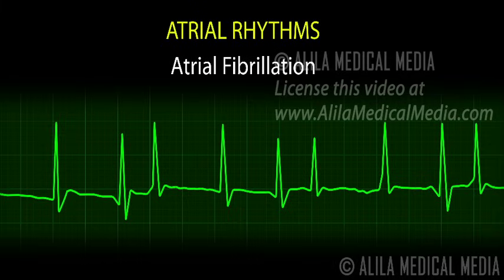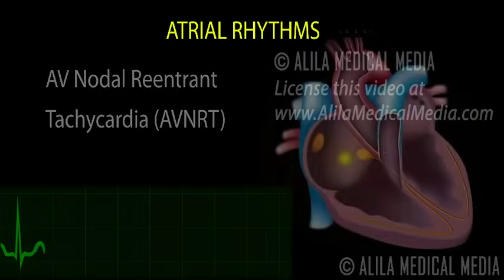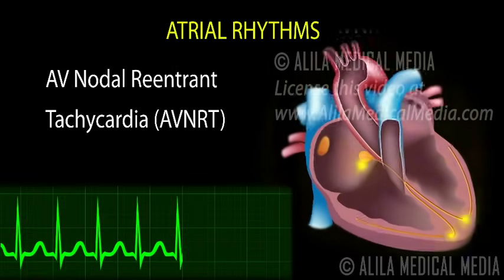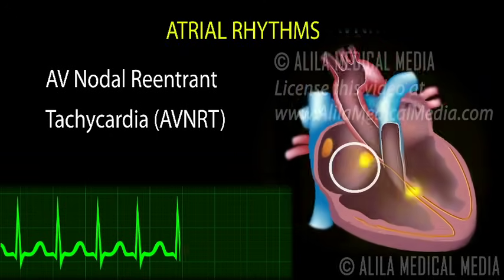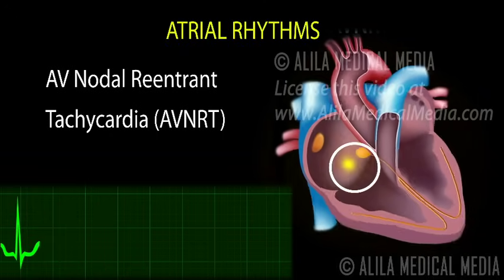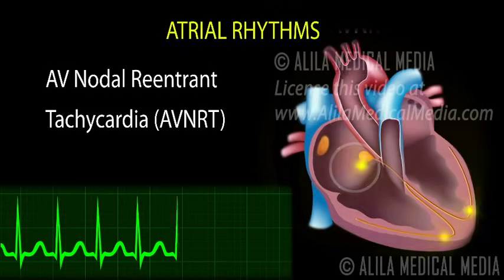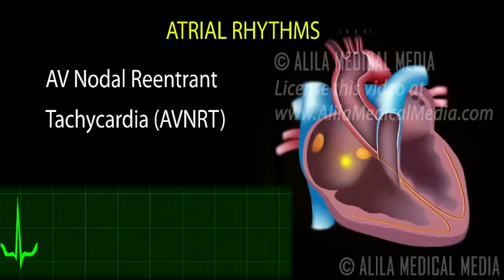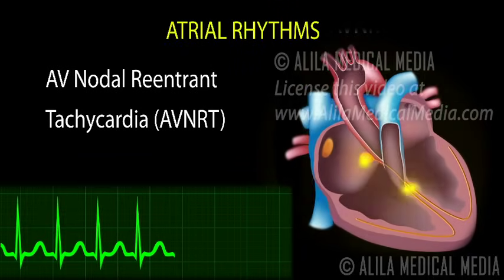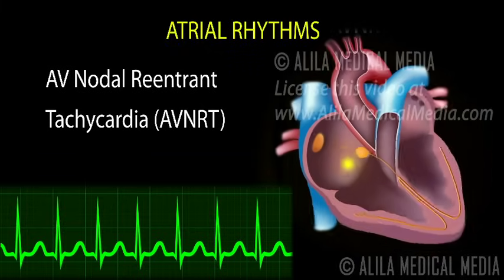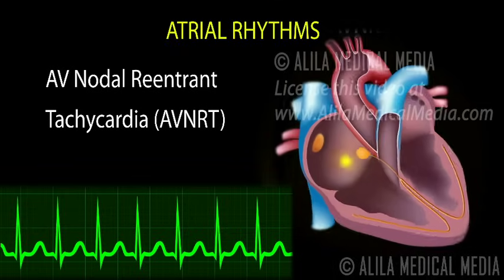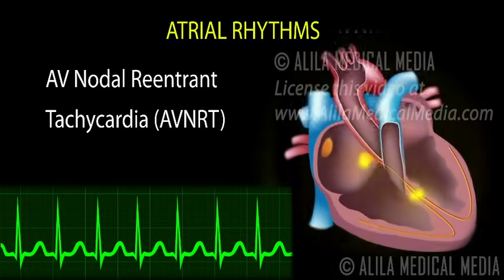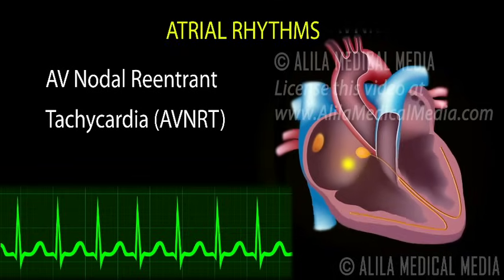In general, a larger number of ectopic sites results in a flatter baseline. AV nodal reentrant tachycardia, or AVNRT, is caused by a small reentrant pathway that involves directly the AV node. Every time the impulse passes through the AV node, it is transmitted down to the ventricles. The atrial rate and ventricular rate are therefore identical. Heart rate is regular and fast, ranging from 150 to 250 beats per minute.